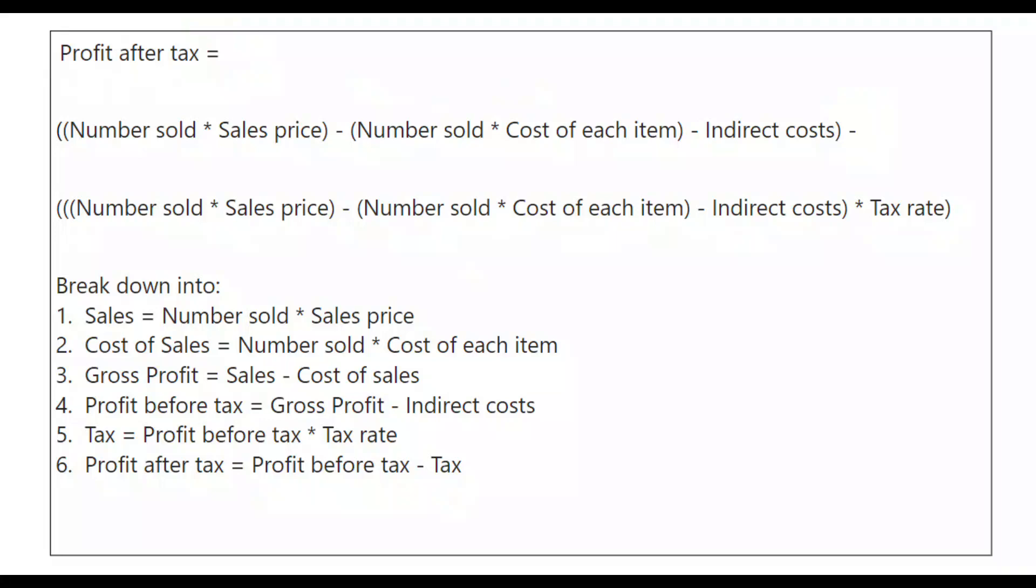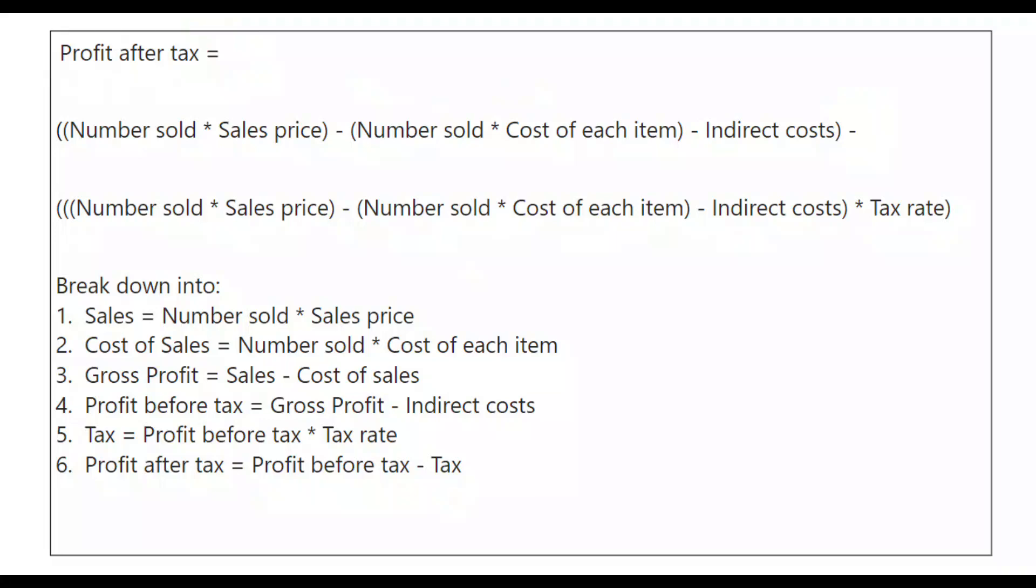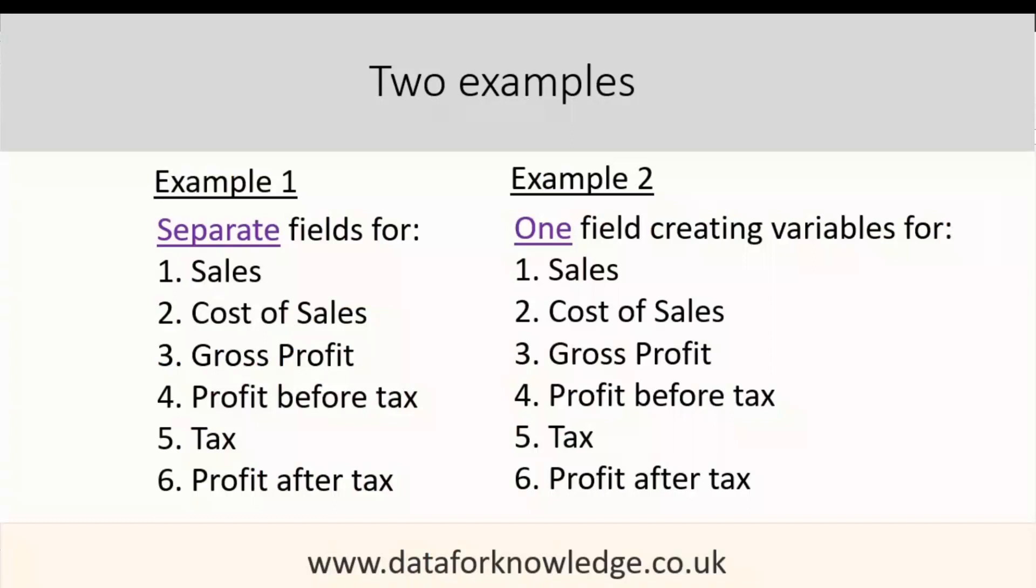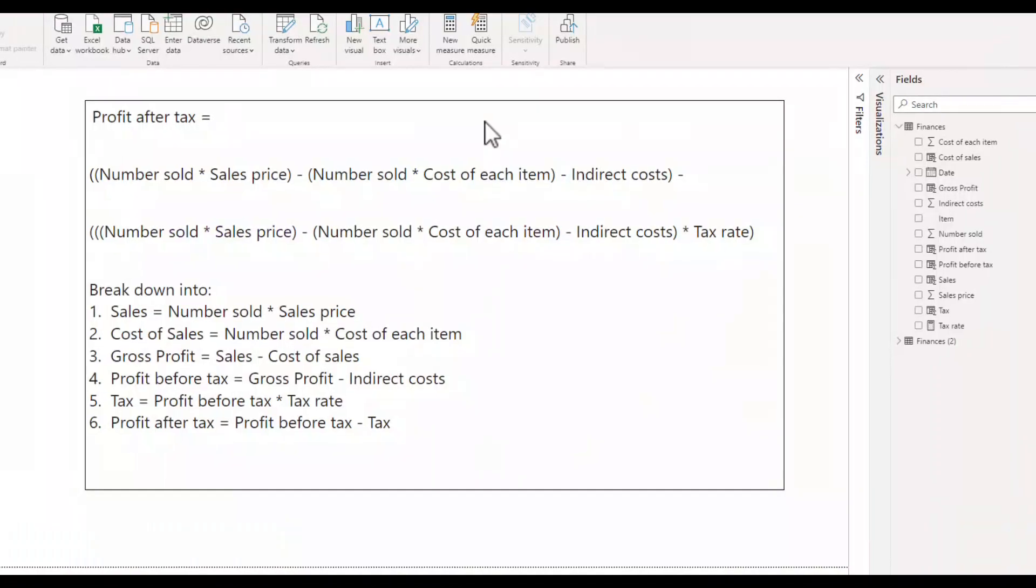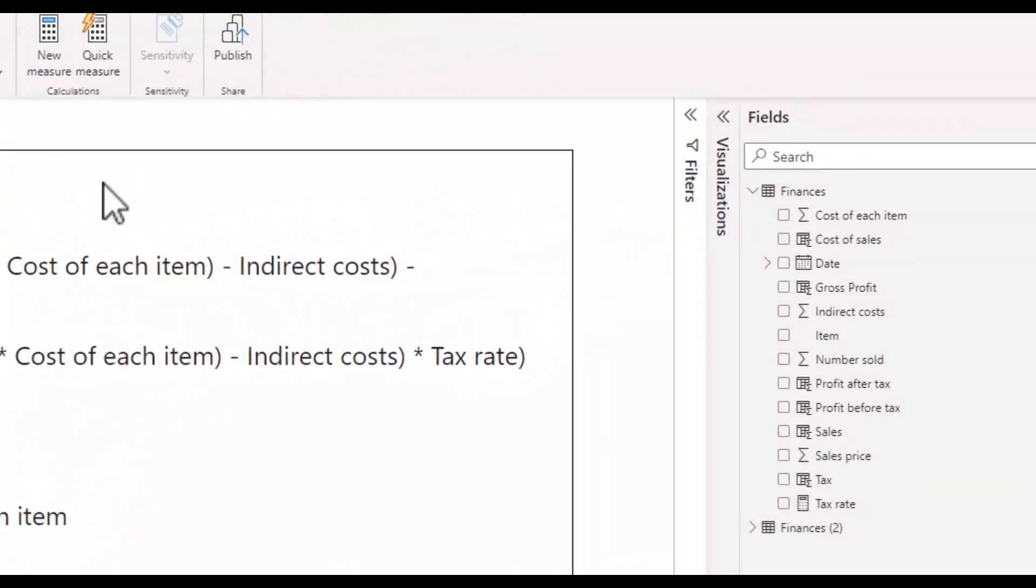And that is the breakdown of the calculation complete. Now, to write the code in Power BI. In example one, I put each step into a new calculated column. I am using calculated columns for ease of this demonstration, but there are other methods of creating the component parts in Power BI, such as using measures. So, you would need to consider which method best suits your requirements. For speed, I have already set up the calculated columns in my table called finances.